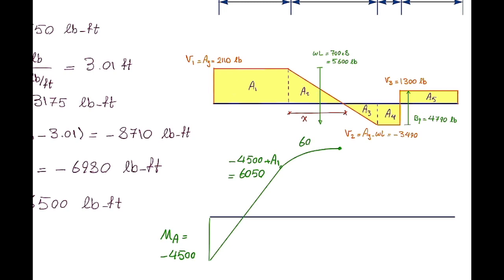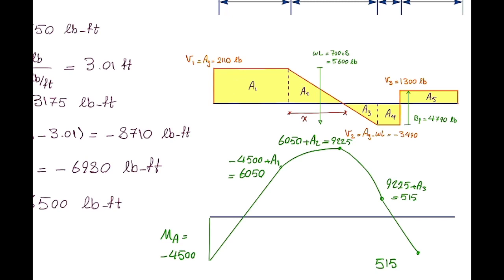The moment would increase again since the shear diagram is positive, so it would increase to the intersection point. The moment at that point would be 6050 plus Area 2, which gives 9225. After this point, the moment would start decreasing because the area under the shear is negative. It goes downward to the next point, where the moment is 9225 plus Area 3 (which is negative), resulting in 515 pound-feet. It then decreases with a constant slope, and the moment at the bottom part would be 515 plus Area 4, which is 6450. The moment at the very right end would be 6450 plus Area 5, and that results in 0.